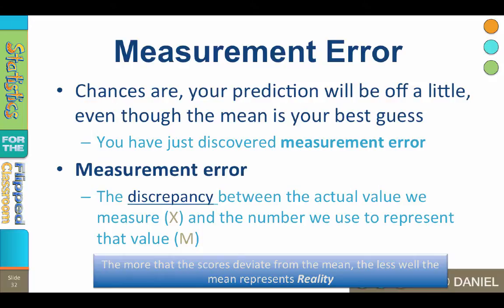So we use the mean as a model, but this tells us two things. One, each X value will have a deviation from the mean, even if that deviation is 0. So we can use deviation scores as a measure of variability. And two, the more that the scores deviate from the mean, the less well the mean represents reality.